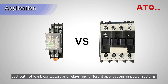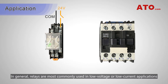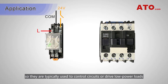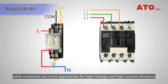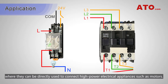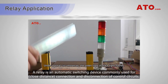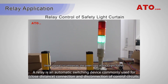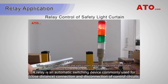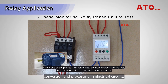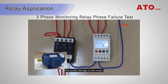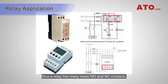Last but not least, contactors and relays find different applications in power systems. In general, relays are most commonly used in low voltage to low current applications, so they are typically used to control circuits or drive low power loads. A relay is an automatic switching device commonly used for close-distance connection and disconnection of control circuits, primarily designed for signal detection, transmission, conversion, and processing in electrical circuits. Thus, a relay has many more normally open and normally closed contacts.